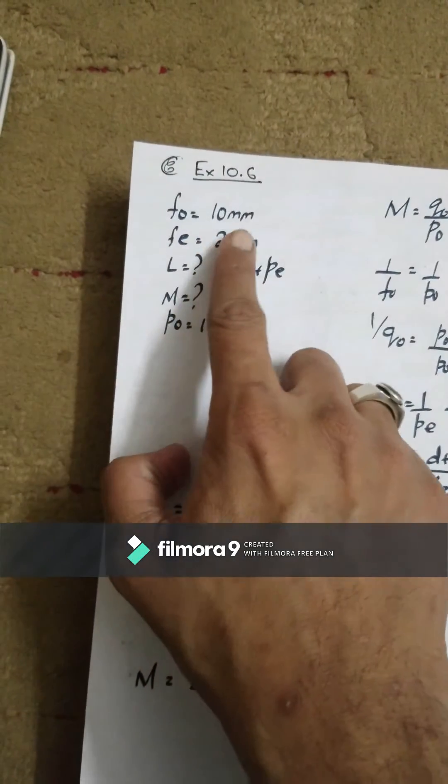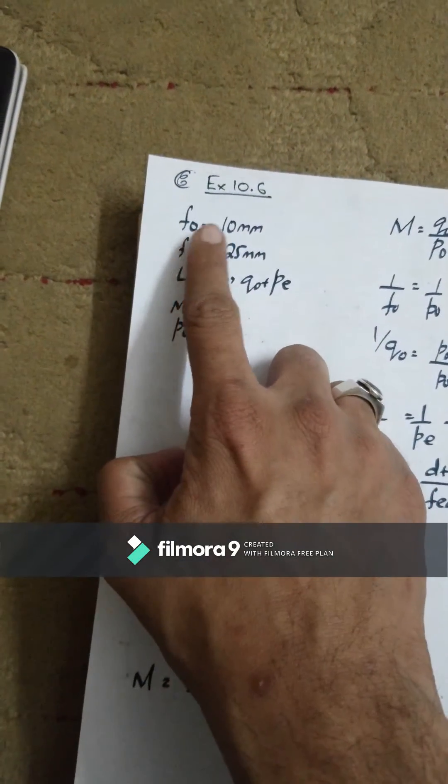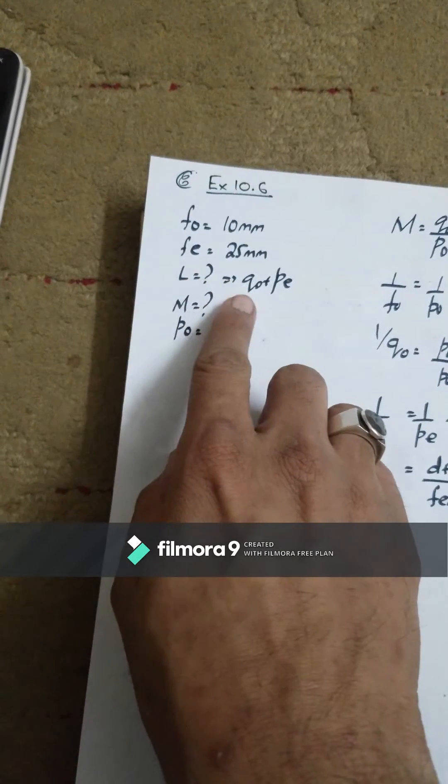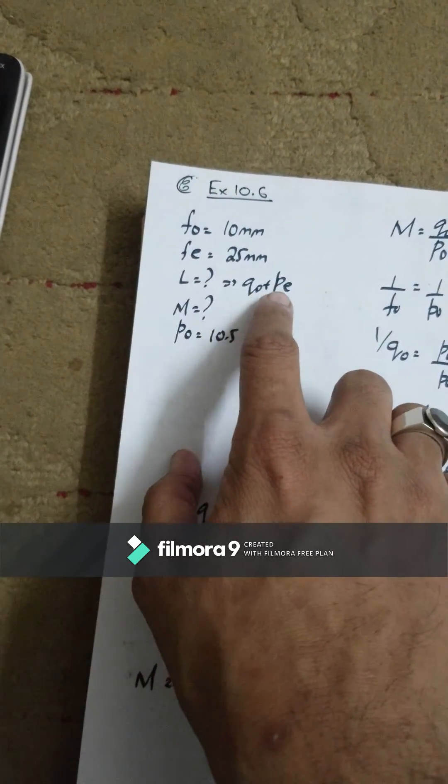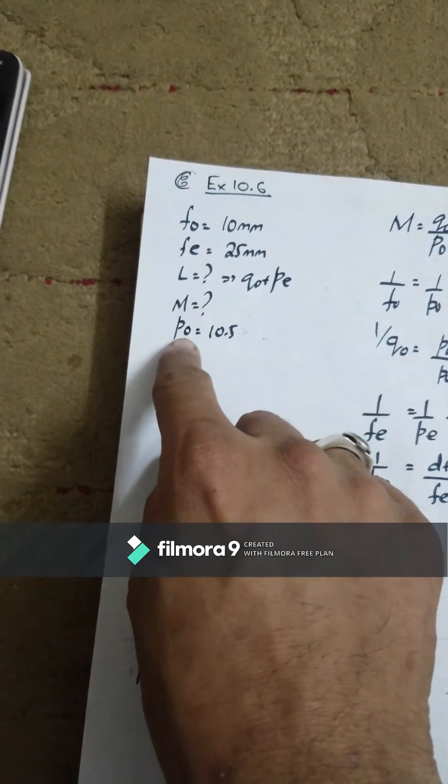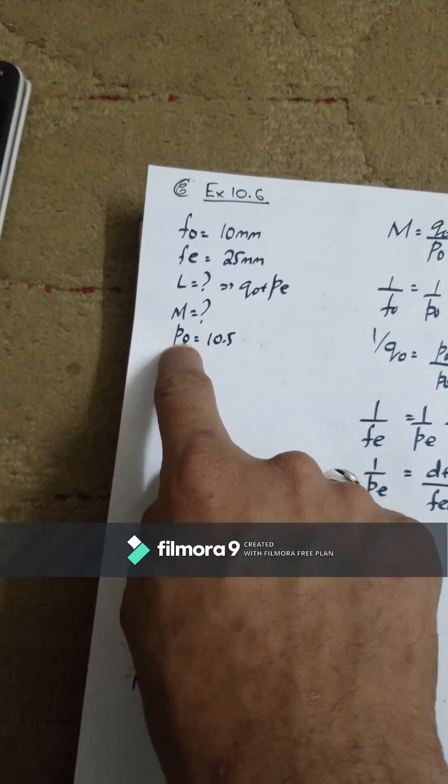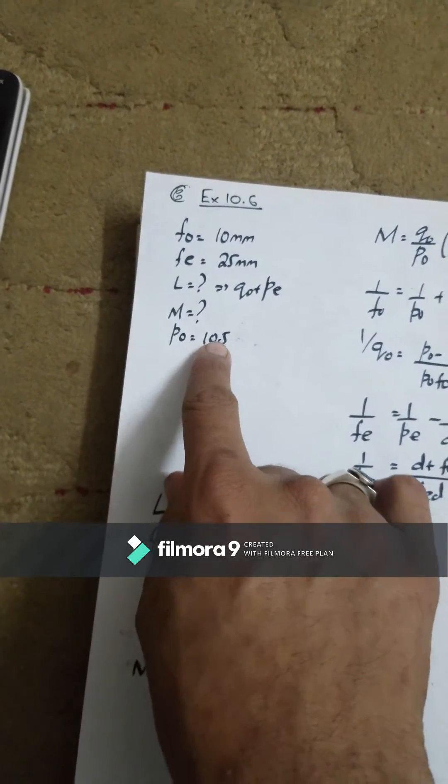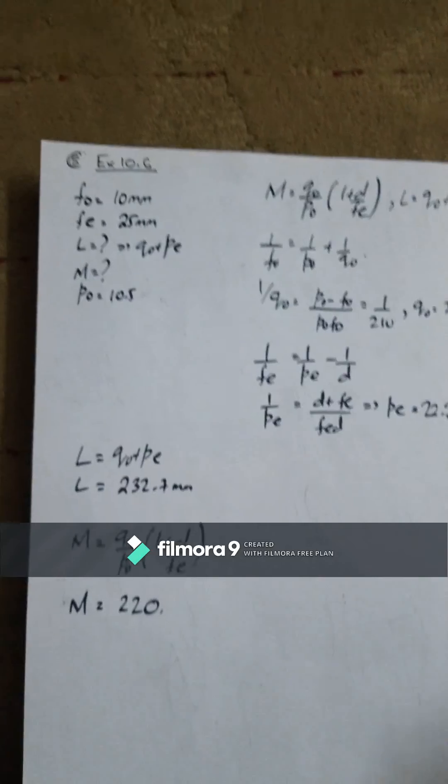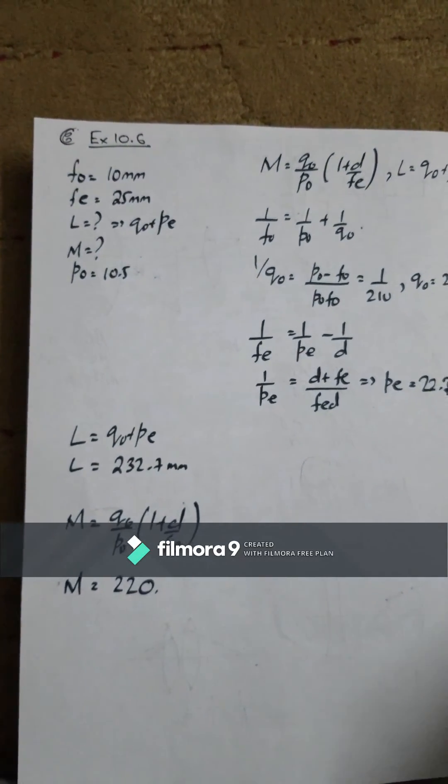In this example, we have all these things given. Focal length of objective, focal length of eyepiece. We have to find the length, the distance between Q0 and Pe, and magnification. Object distance from objective given is 10.5. Many people say objective is 11 and eyepiece is 22.